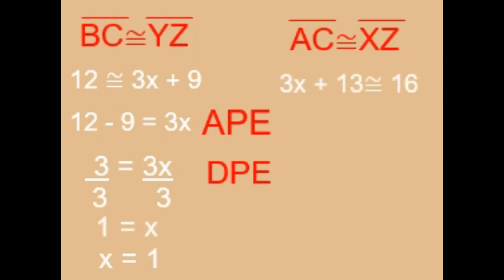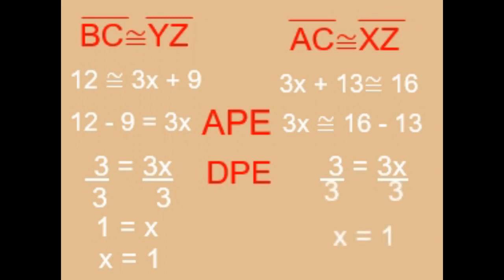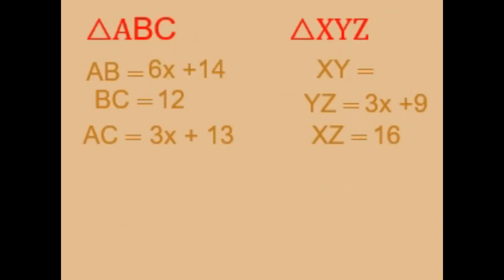Next, side AC equals 3x plus 13 and side XZ equals 16. We isolate 3x using the addition property of equality: 3x equals 16 minus 13, so 3x equals 3. Dividing both sides by 3, x equals 1. Both equations confirm x equals 1.